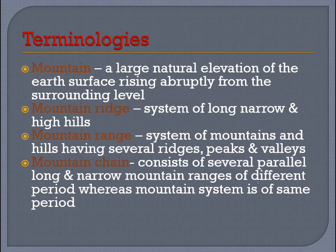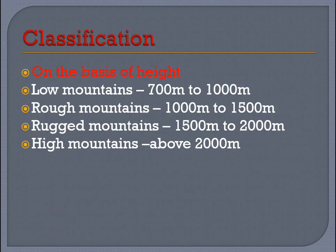Mountain chains are formed during different geological time scales, whereas a mountain system is formed during the same period. The next term is cordillera — they consist of mountains of several groups and systems, and they are called cordillera.